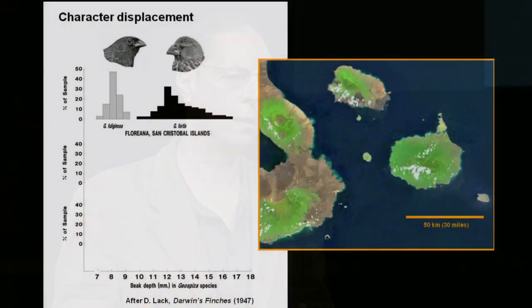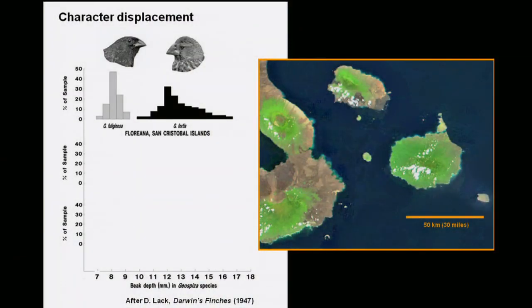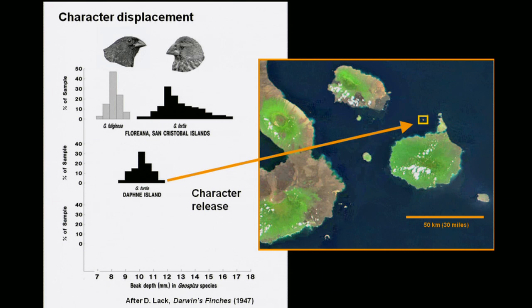Darwin's finches are such a famous case because they exemplify these two basic principles. Character displacement is the instance of two species coming together and pushing each other into different ecological niches. One of the first documented cases was with Darwin's finches — when you see the small and the medium ground finch on the same island, they push each other apart. There's an interesting natural experiment on Daphne Island, where Peter and Rosemary Grant do most of their award-winning research. Only one of those two species is found there, and its beak structure is exactly intermediate between the two forms seen when they're together on the same island.